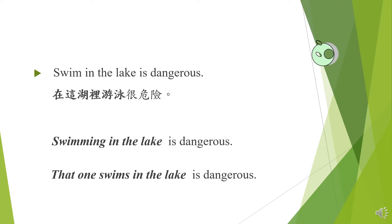請看例句：Swing in the lake is dangerous。不少同學常受中文影響，直接把中文帶進英文，卻違反了英文文法規則。這個句子裡面 swing in the lake 很明顯是它的主詞，但 swing 是個動詞，所以造成了一個動詞片語做主詞，而 is 也是動詞。這樣就嚴重違反了英文基本句型裡一個子句只能有一個主要動詞的原則，這裡出現了兩個主要動詞。